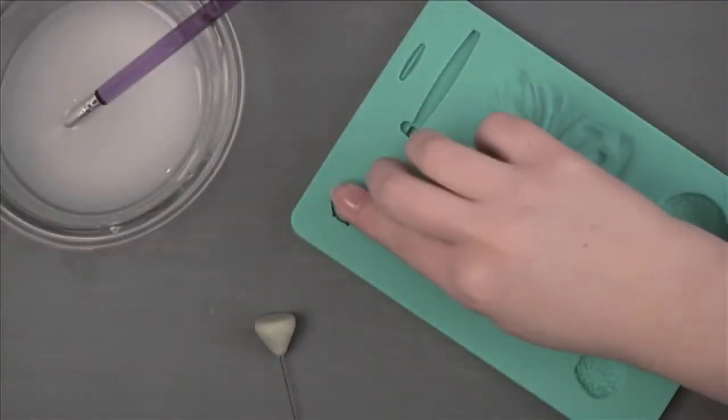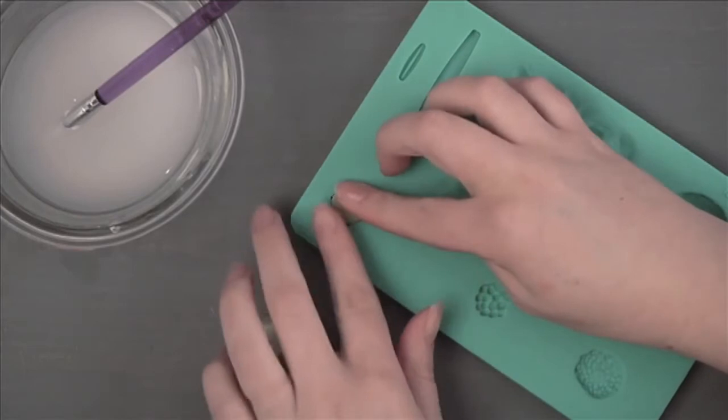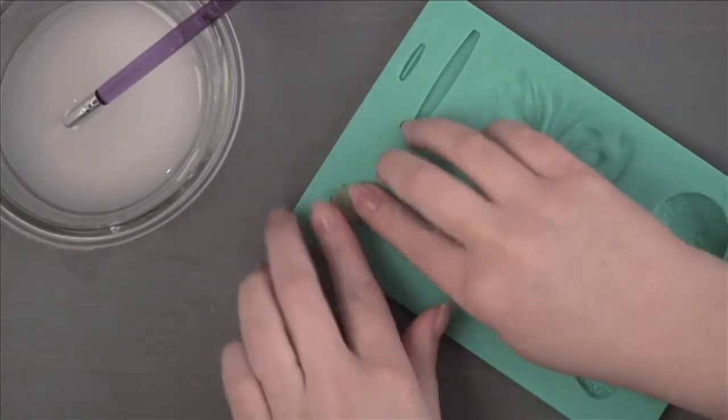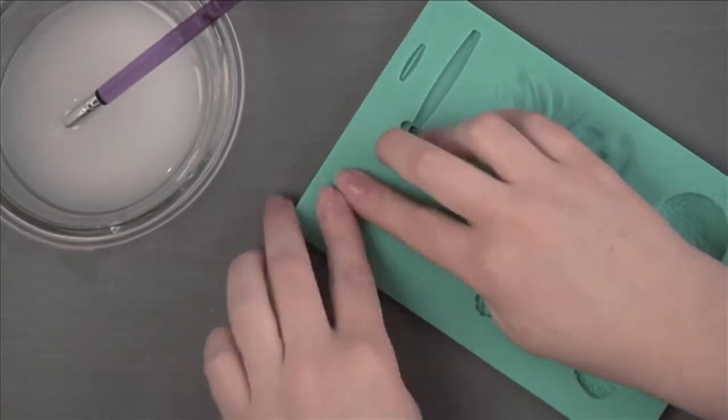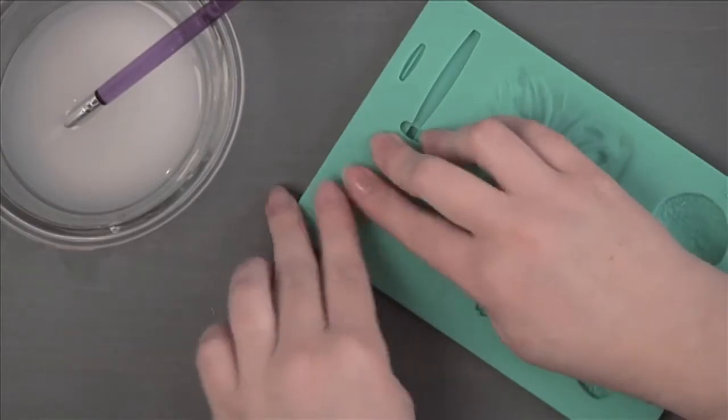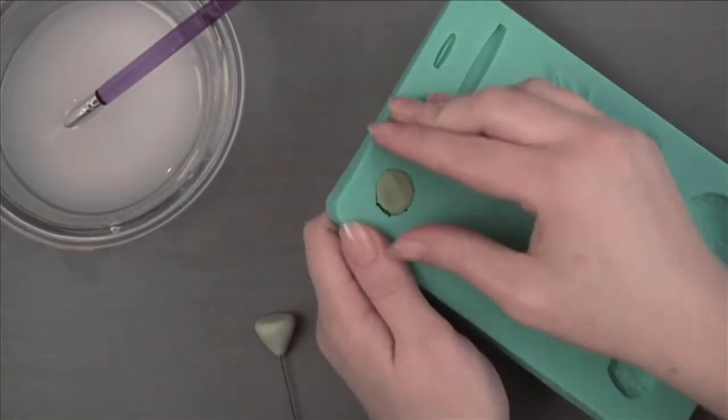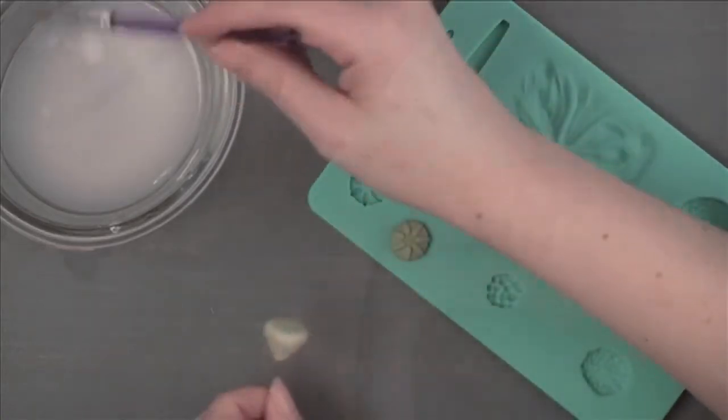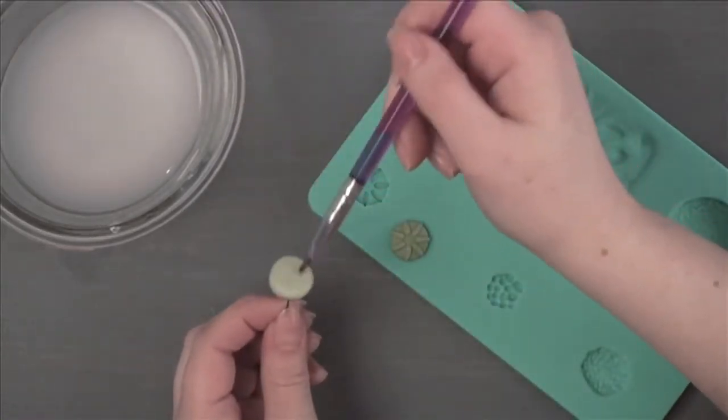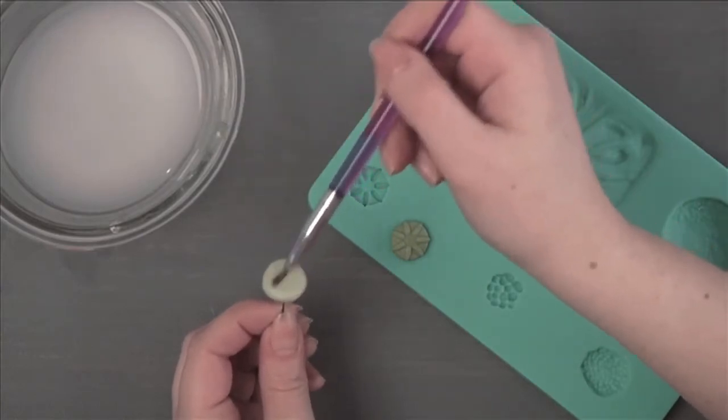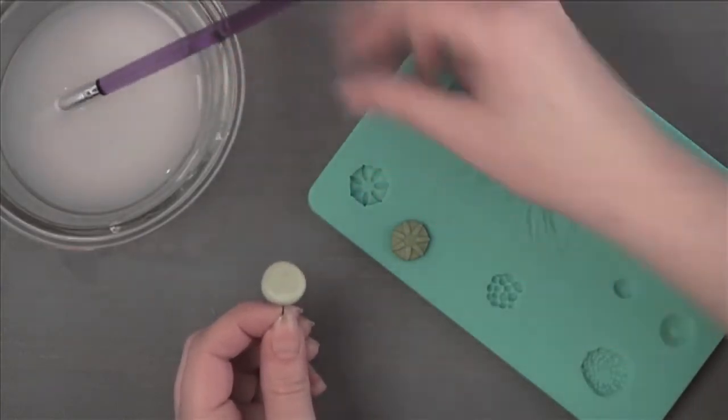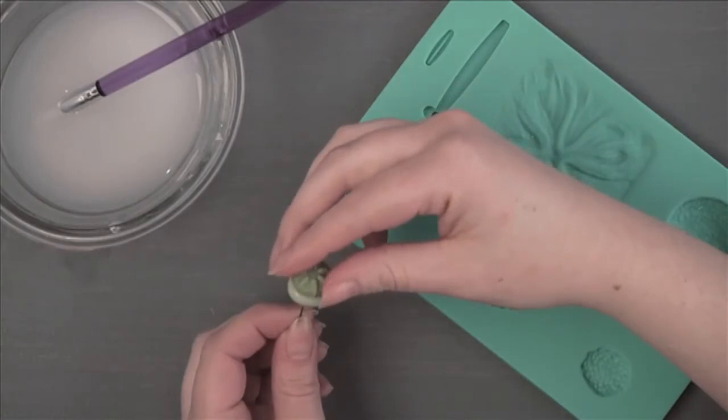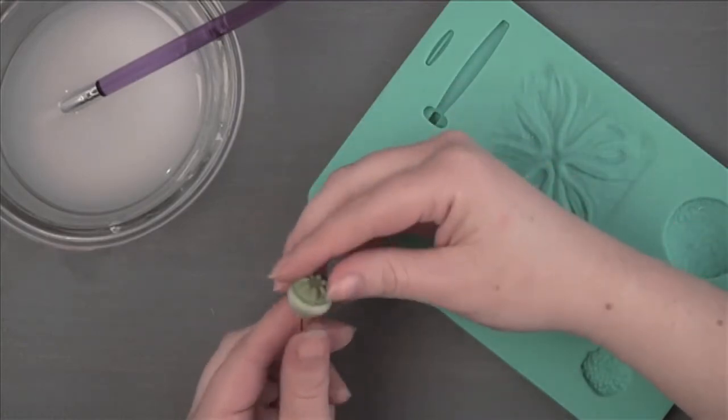Press a small amount of dark moss green gum paste into the cornstarch dusted poppy center top cavity of impression mat. Attach the poppy center to the top of the cone with gum glue adhesive. Let dry for at least 24 hours in a craft foam block.